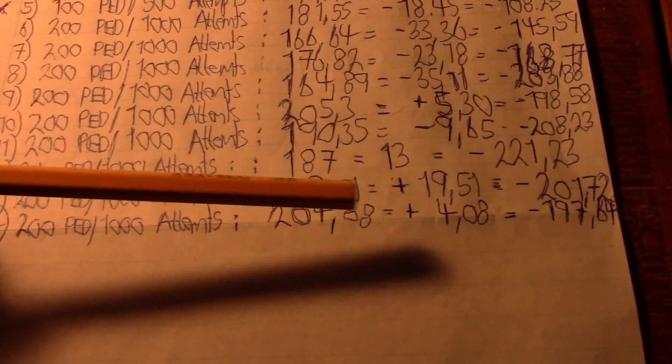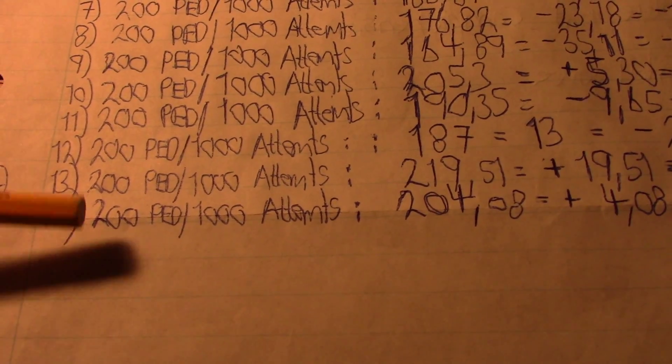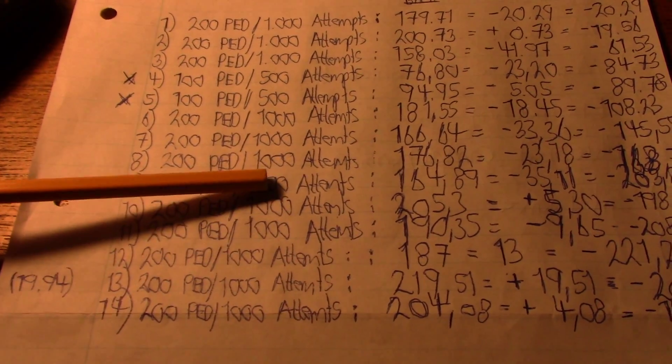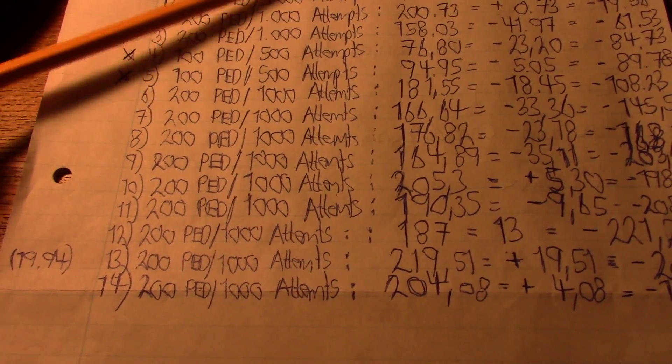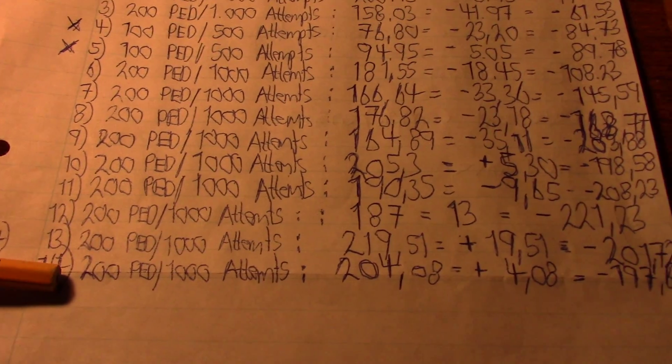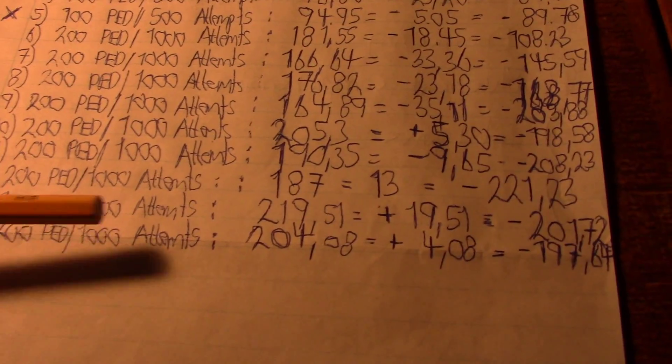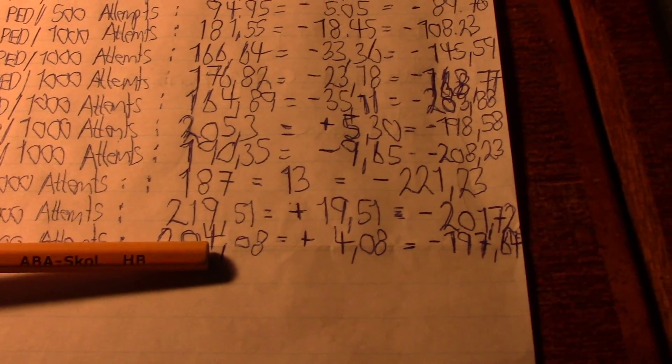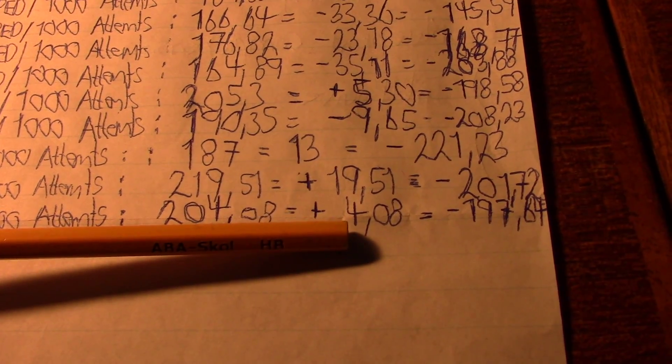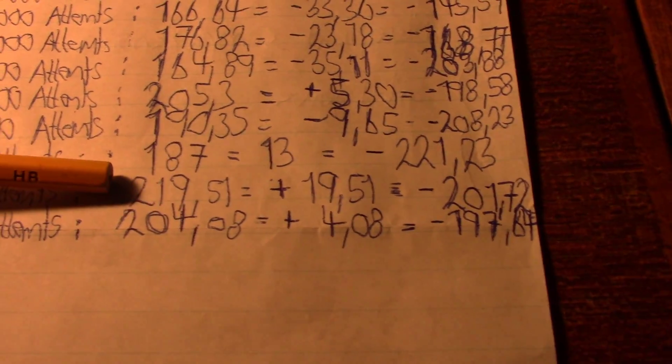The last minute, this is what I'm writing. I did 30,000. I have calculated 1, 2, 3, 4, 5, 6, 7, 8, 9, 10, 11, 12, 13. So it was 13,000 attempts and I do it in piles of 200 PED, 1,000 attempts. The last one I got profit on 4 PED, and the one before I got my biggest profit at 19.51.